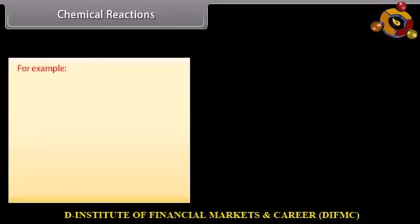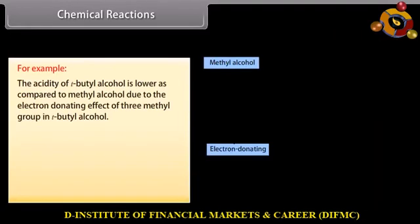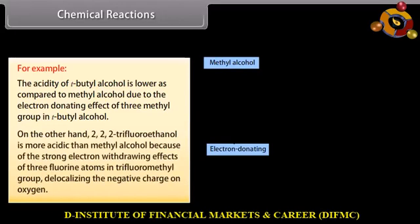For example, the acidity of tert-butyl alcohol is lower compared to methyl alcohol, due to the electron-donating effect of 3 methyl groups in tert-butyl alcohol. On the other hand, 2,2,2-trifluoroethanol is more acidic than methyl alcohol, because of the strong electron-withdrawing effect of 3 fluorine atoms in the trifluoromethyl group, delocalizing the negative charge on oxygen.